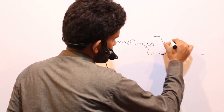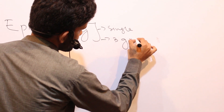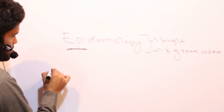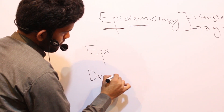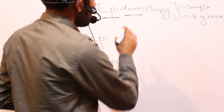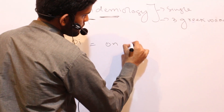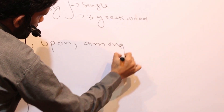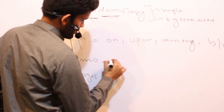The word 'epidemiology' is a single word, but it is composed of three Greek words combined to form it. The first is 'epi', the second is 'demio', and the third is 'logos'. These three words combine to form the word epidemiology. 'Epi' simply means upon, among, or between. 'Demio' means the population or the people.